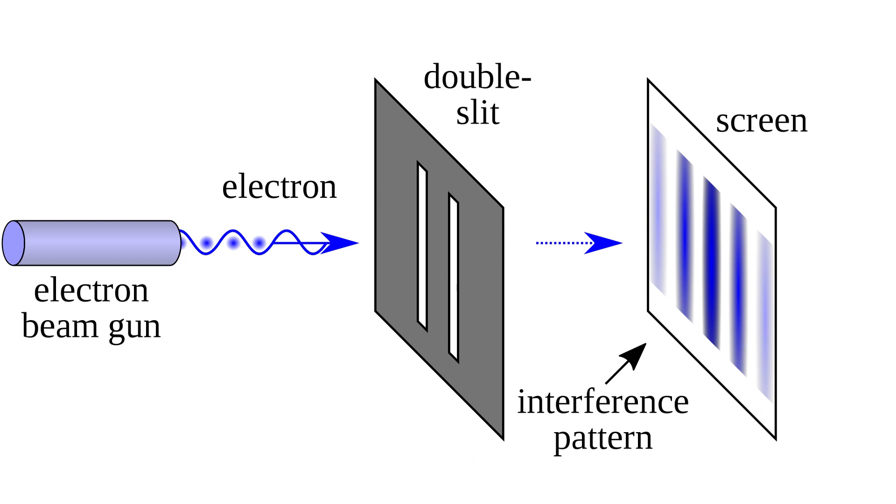If we place a detector at one of the slits, we could find out if the given particle goes through one slit or the other. When they do this, no interference pattern is created. So the act of observing the particles, and in no way disturbing their motion, has affected the outcome of the experiment.